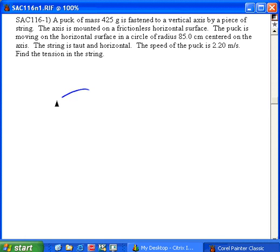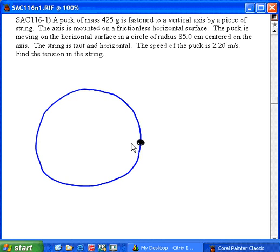We've got a puck over here moving in a circular path. Here's the puck, and the blue curve represents the circular path. It's tied by a string to an axis at the center, and it's moving around the circle with a velocity.